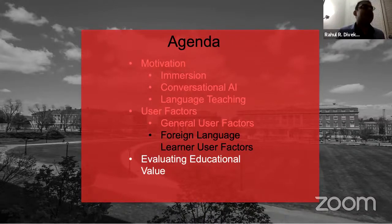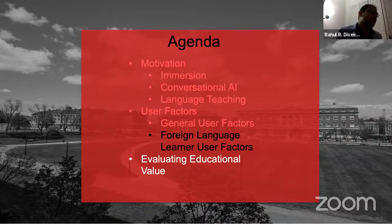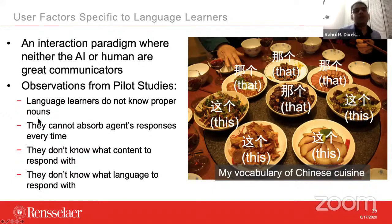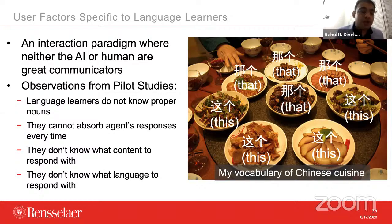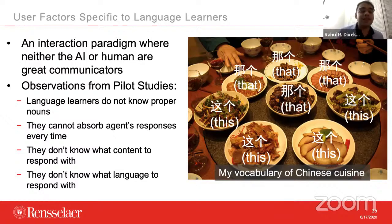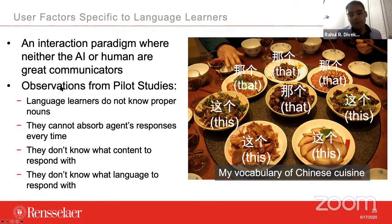One interesting thing about this type of user paradigm: when you talk to an AI agent, it's generally assumed that between you and the AI agent, you probably know more than the AI agent — especially the language. We know how to craft sentences in so many ways; AI agents typically don't understand complex sentences. But in the language learning domain, it's different — even the user doesn't know the language because they're trying to learn it.